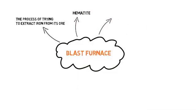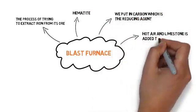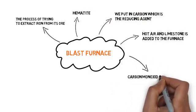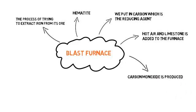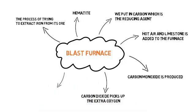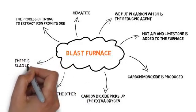We do a few things to it. Firstly we put in carbon, which is the reducing agent. After that, hot air and limestone are added to the furnace. The temperature in the blast furnace is very high. Carbon monoxide is produced and this is what does the reduction process, and carbon dioxide picks up the extra oxygen. The reason we add limestone is to get rid of a lot of the other acidic impurities. On top, slag is left.